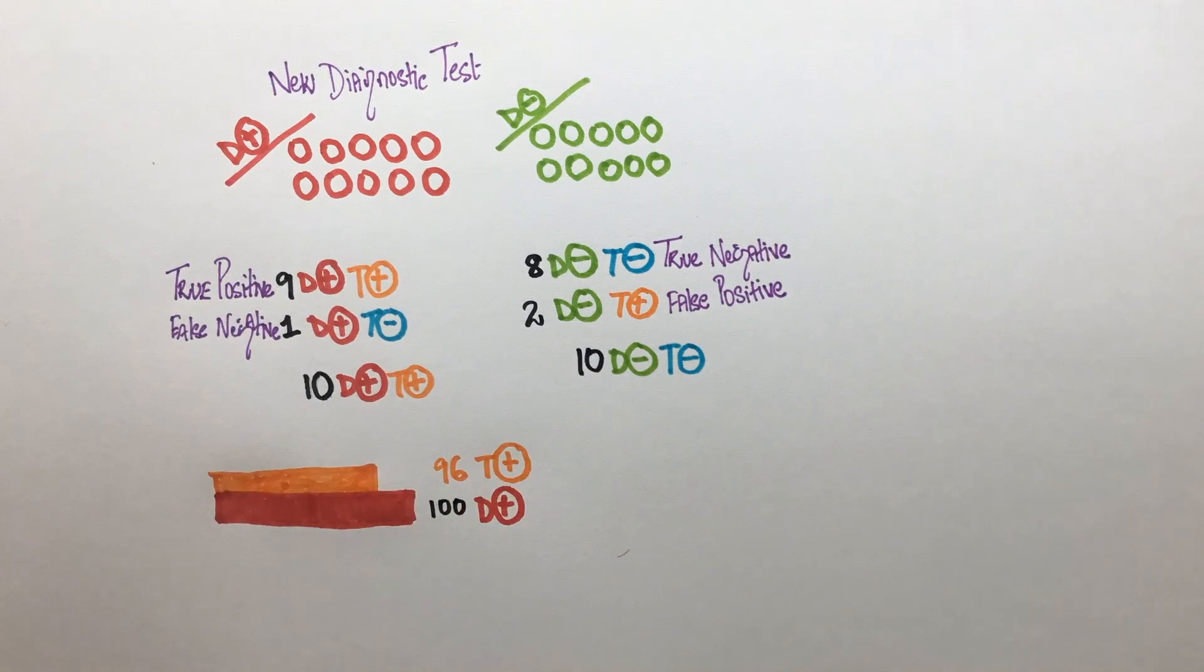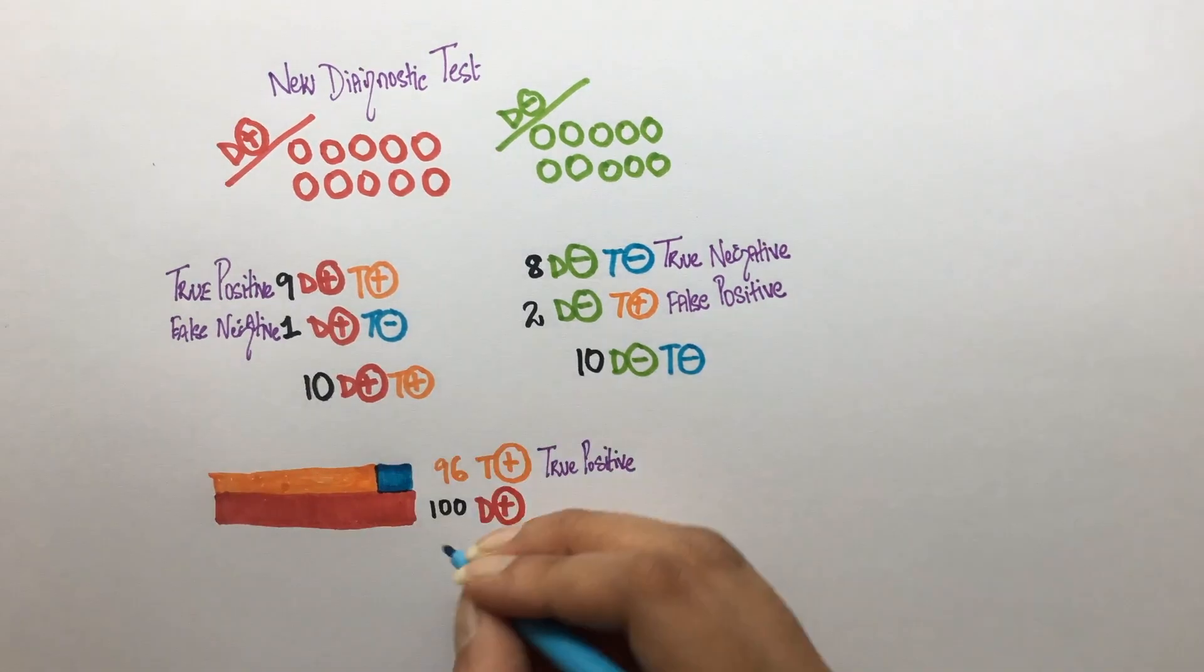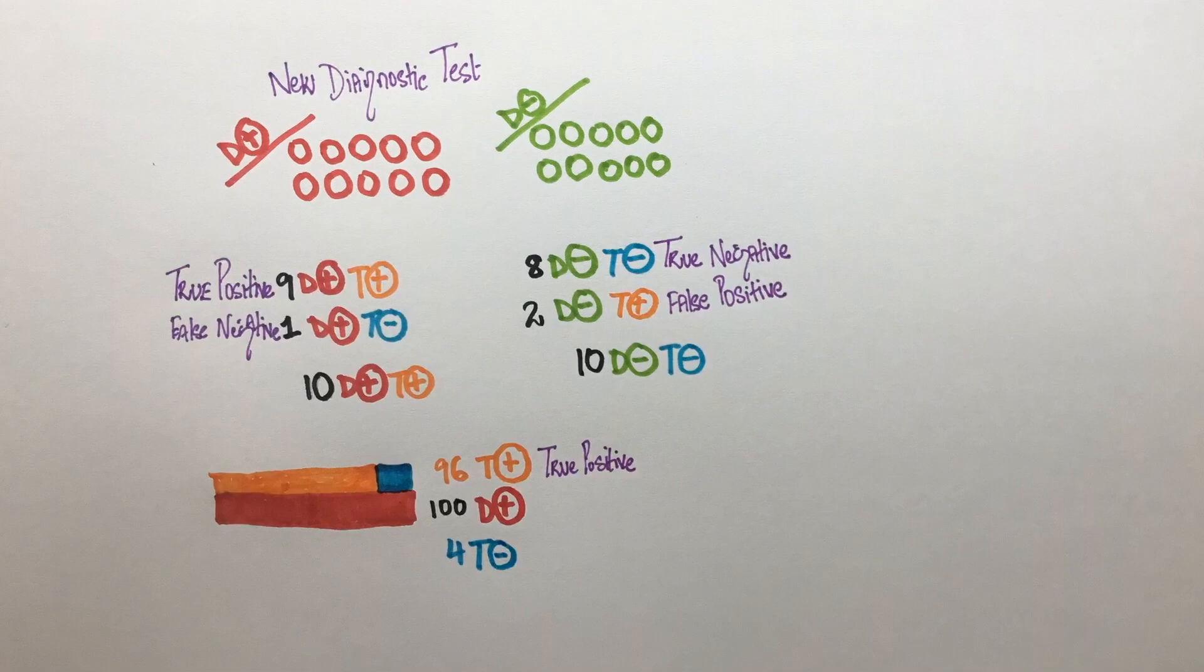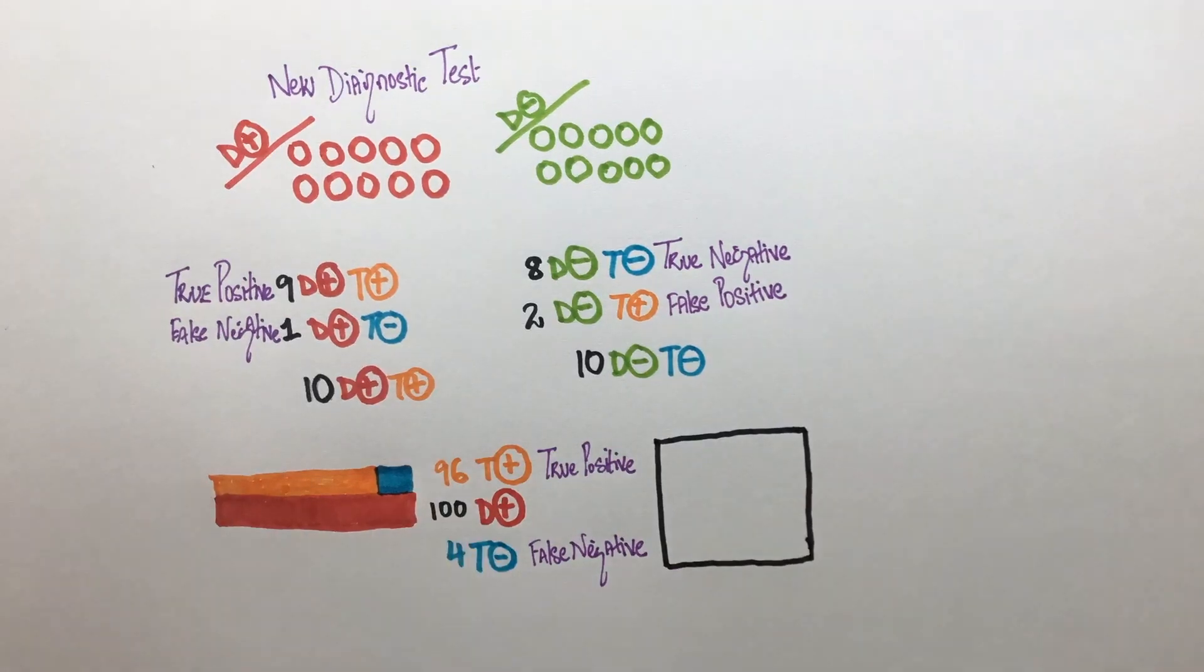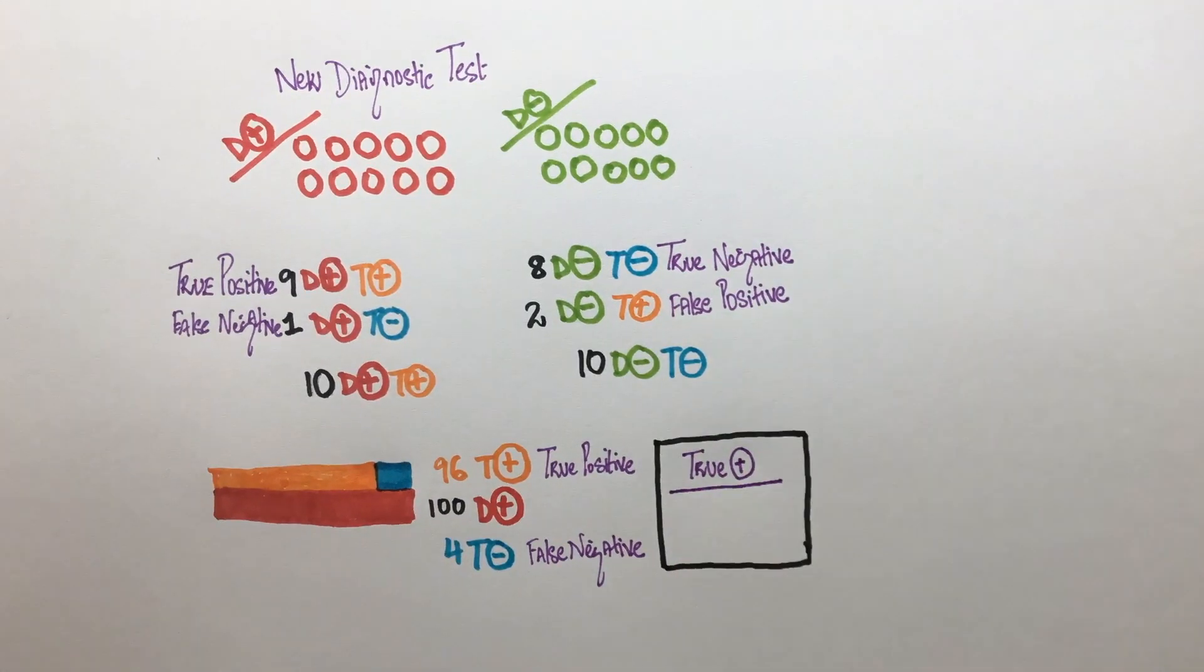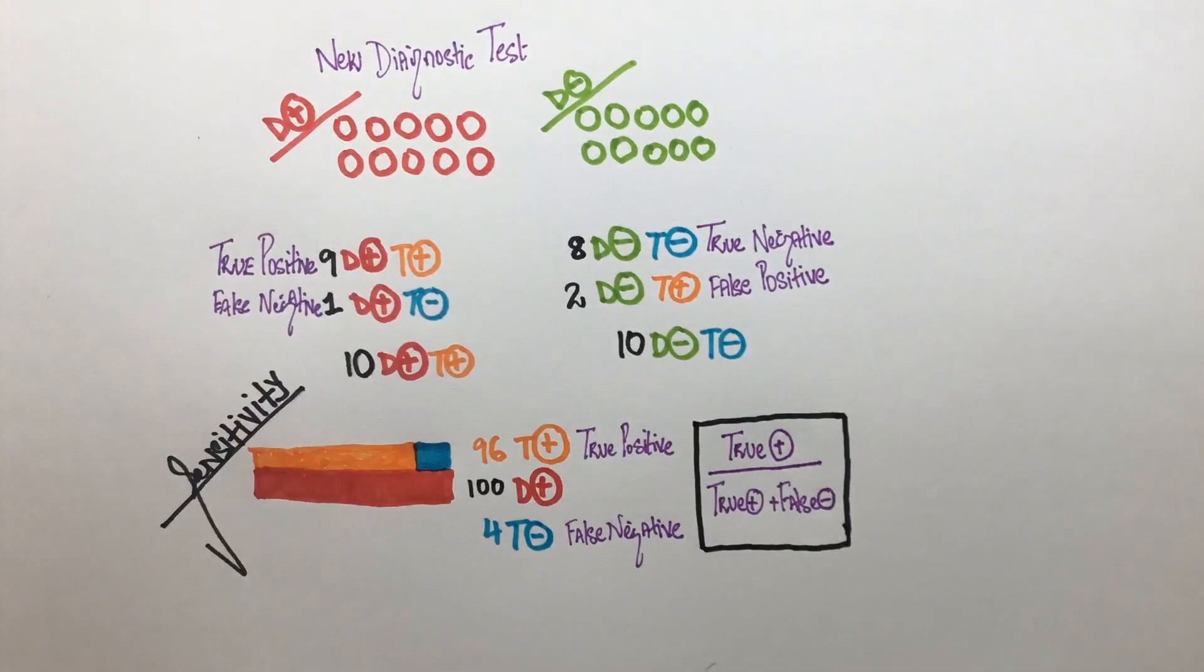These 96 people are true positives. The remaining four people who are missed by this test are false negatives. So, our numerator here will be true positives and our denominator will be a sum of true positive and false negatives.